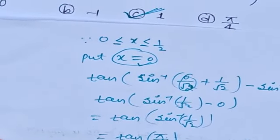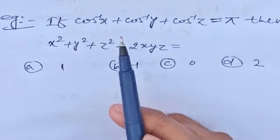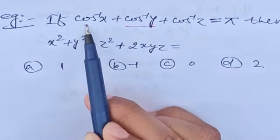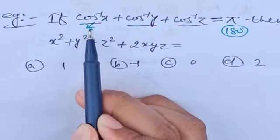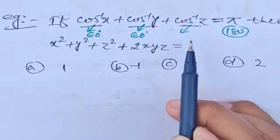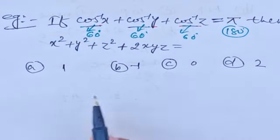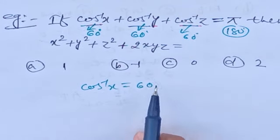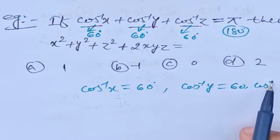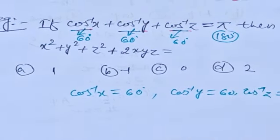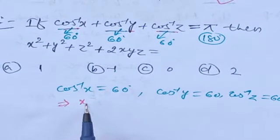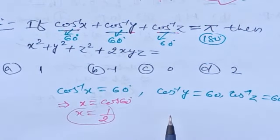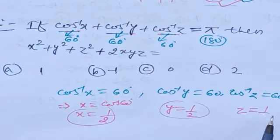The next question is: if cos⁻¹x + cos⁻¹y + cos⁻¹z = π, which is 180°, find the required expression. Since the sum of three cos inverse terms equals 180°, we can consider each equal to 60°. So cos⁻¹x = 60°, cos⁻¹y = 60°, cos⁻¹z = 60°, giving x = y = z = cos 60° = 1/2.